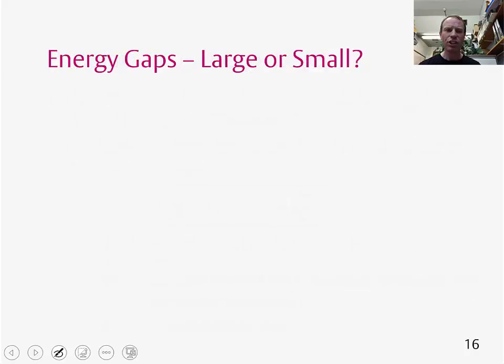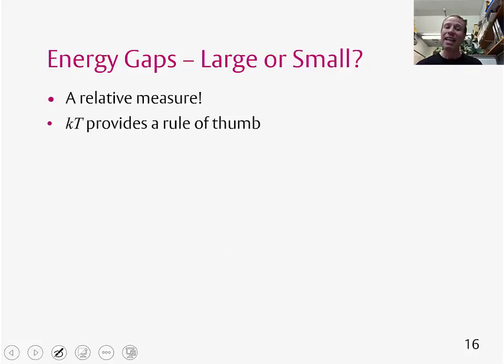So if you have an energy gap, is it large or small? This is obviously a relative measure. And KT, so the Boltzmann constant multiplied by temperature, gives you a rule of thumb as to whether an energy gap is large or small at room temperature.